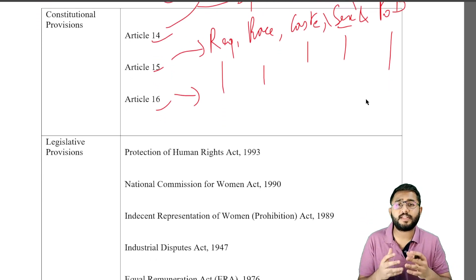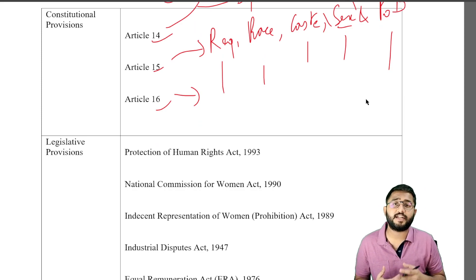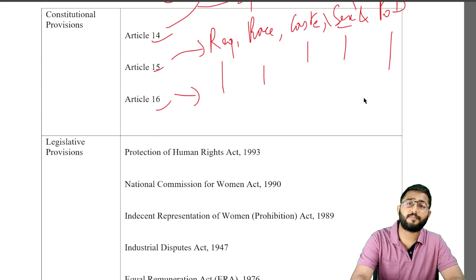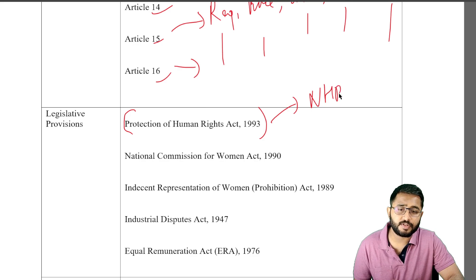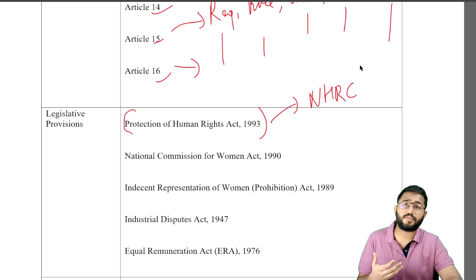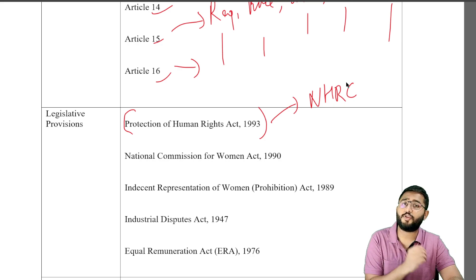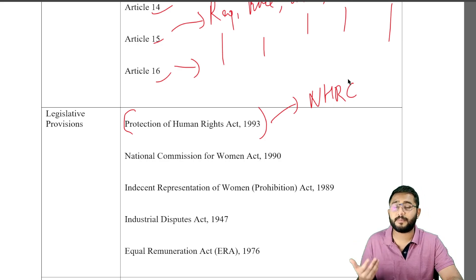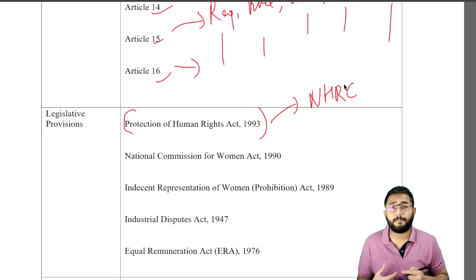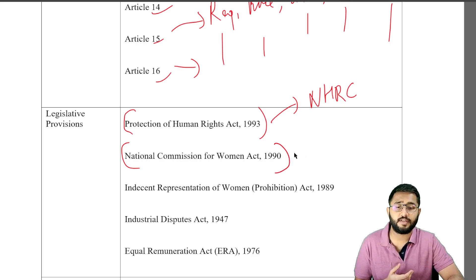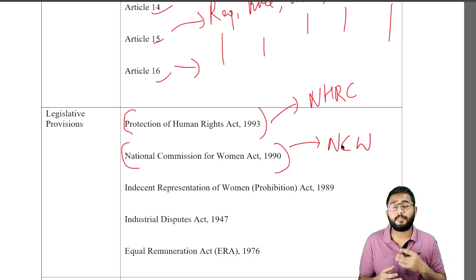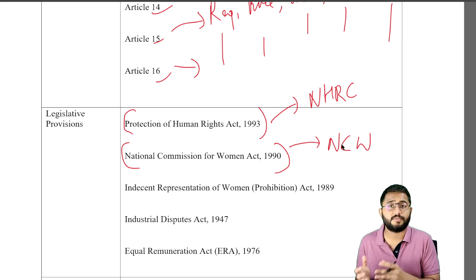We will now look at the legislative provisions that harmoniously support the constitution. The first example is the Protection of Human Rights Act, through which we got the National Human Rights Commission. The NHRC has the responsibility to protect each and every human right, including women's rights. For a more focused approach, the National Commission for Women Act of 1990 was created, which later established the National Commission for Women to have a much more focused view towards women's rights in India.